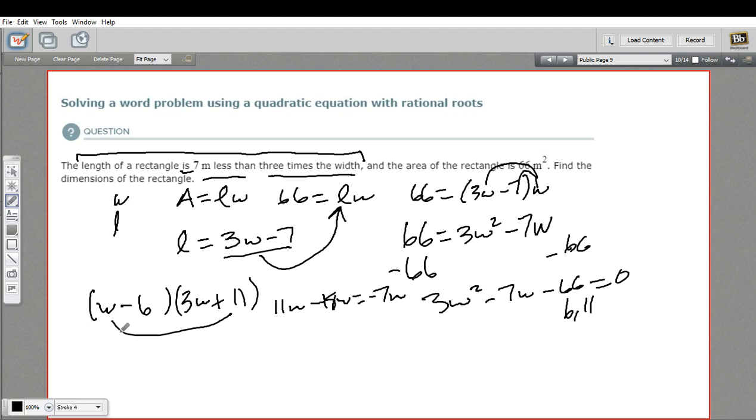So let's set each of those equal to 0. W minus 6 equals 0. And 3W plus 11 equals 0. Solve the first one by adding 6 to both sides. We'd get W equals 6. Solve the second one by subtracting 11. That would give us 3W equals negative 11. And then dividing by 3. And we'd get W equals negative 11 thirds.